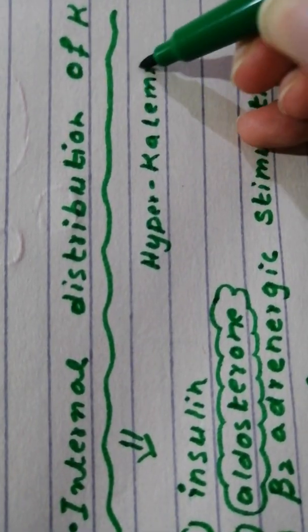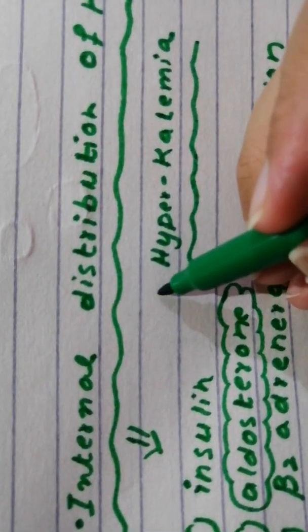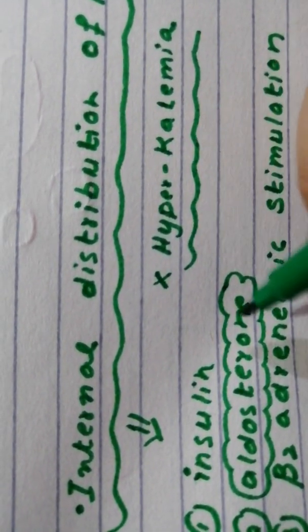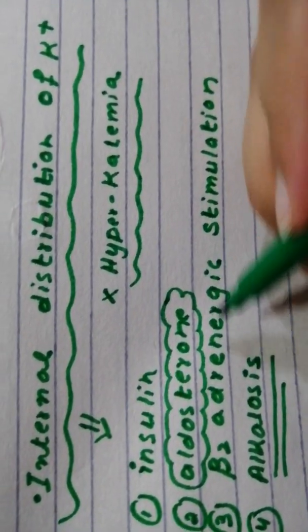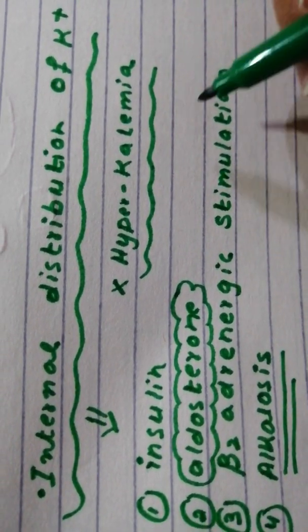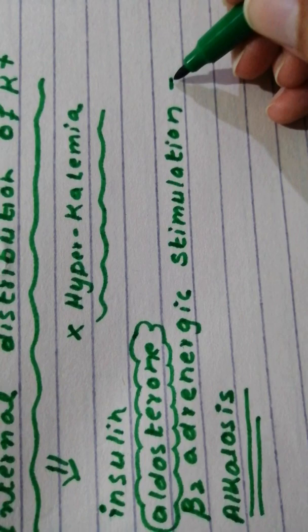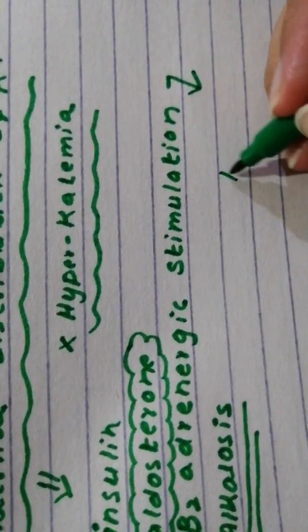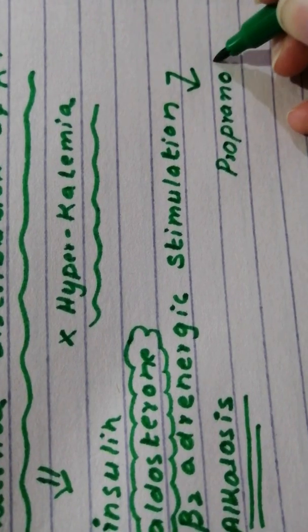Part of the hyperkalemia is due to failure of internal distribution. The normal amount of beta adrenergic stimulation is important for this to happen. If you are taking beta blockers like propranolol, distribution won't happen properly.